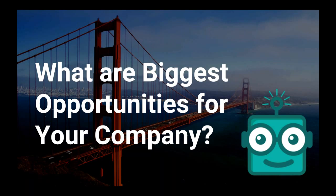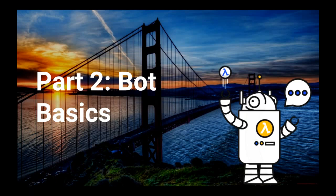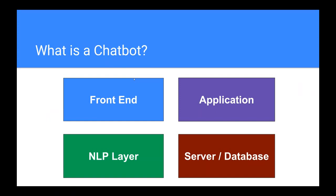Part two: chatbot basics. A chatbot has four main components. First, an application — the part that does something, like a weather app telling you the forecast. Second, a server and database. Third, an NLP layer that processes language and translates it into inputs and outputs. Fourth, the front end — where the bot lives, usually on a messaging platform.